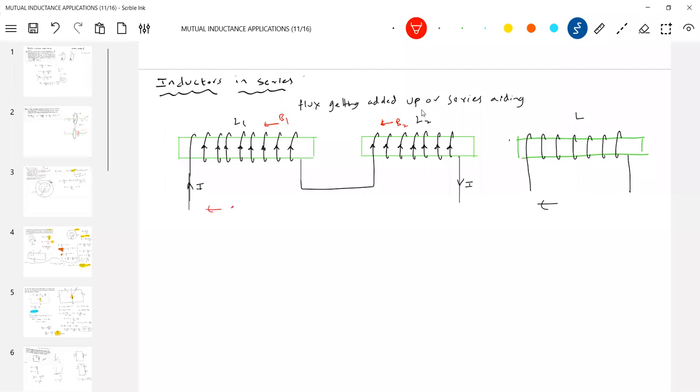Let the EMF induced in this be E1, in this be E2. The resultant, let it be E. Then at what rate the current I change here, at the same rate I'm going to change current here. Together what they'll produce for same rate of change current same EMF. If this coil also produces for the same rate of change of current the same EMF, then shall I say this is equivalent of these two.